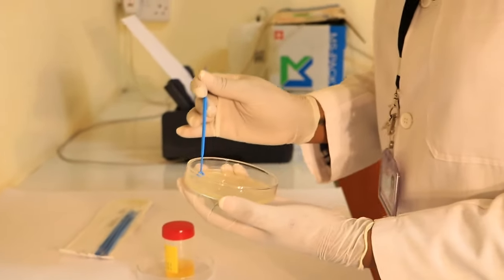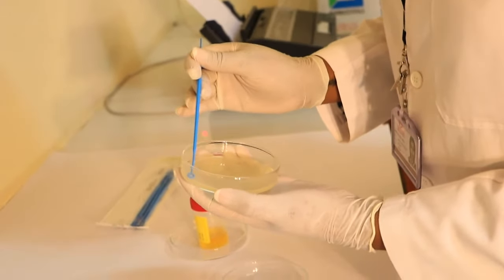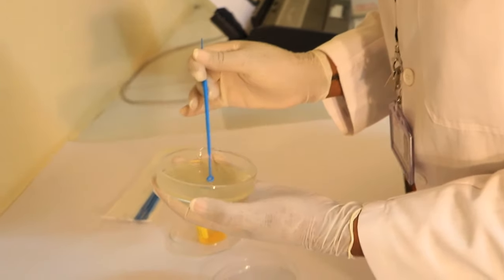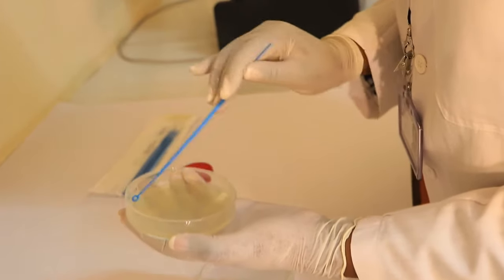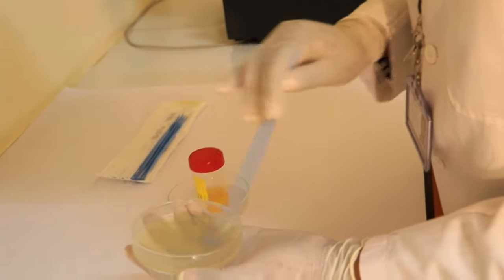Streak the urine down the middle of the plate and then streak from side to side to distribute the organisms evenly on the plate.